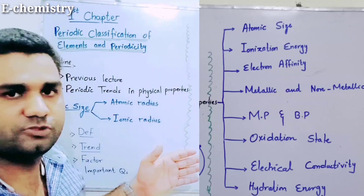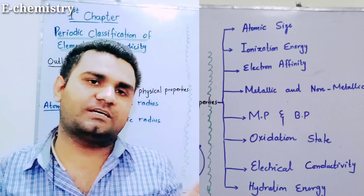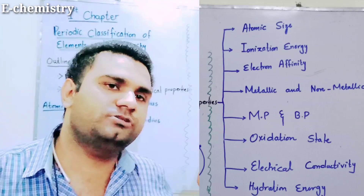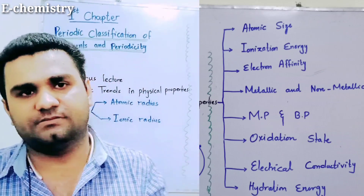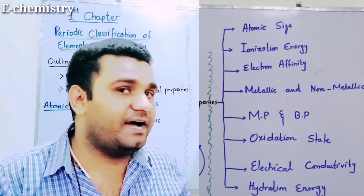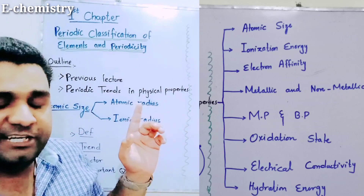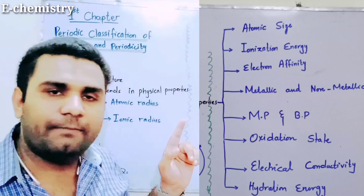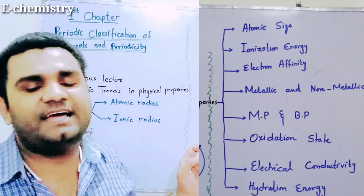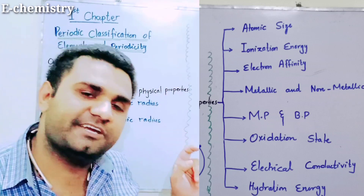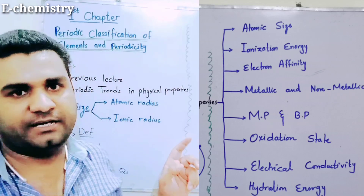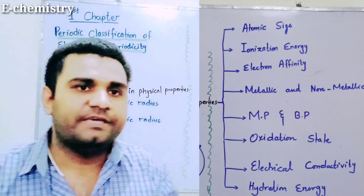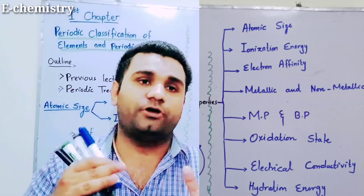Students, we have a total of 8 physical properties to study. The first is atomic size. After that, we will study oxidation state, then electrical conductivity, and lastly hydration energy. These are the physical properties and periodic trends.